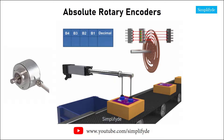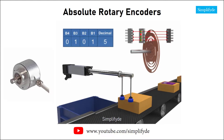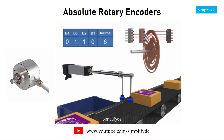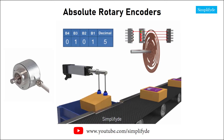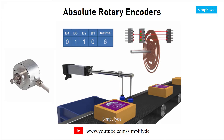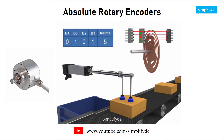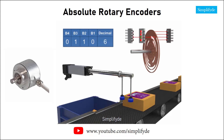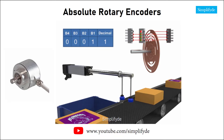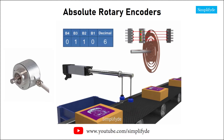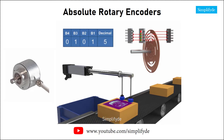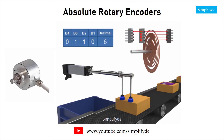For robot applications, absolute encoders are commonly used for precise positioning operations. The actuator in this example demonstrates the function of the absolute encoder in operation. As the actuator moves to push the carton, the encoder provides feedback that it has reached the user-defined position. The actuator then moves back to the home position, verified by the encoder, completing the cycle.